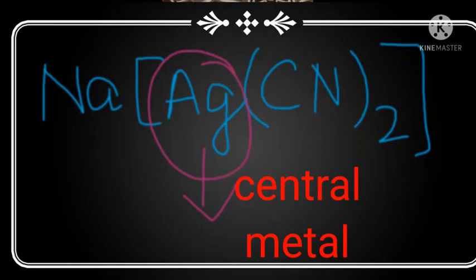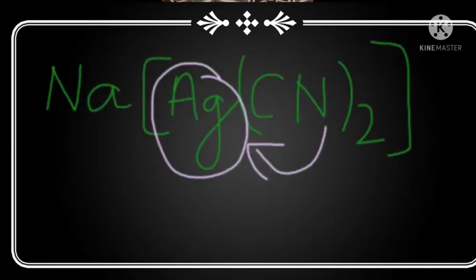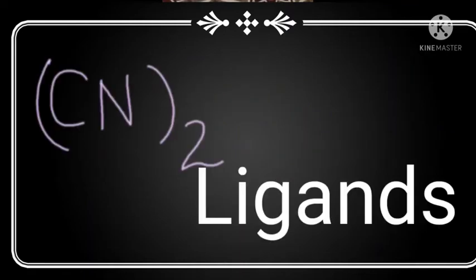No doubt there are two metals - sodium is also a metal and silver is also a metal - but we have considered silver as the central metal. Why is silver considered the central metal? Because it has formed directly a bond with ligand. That (CN)2 is a ligand here.